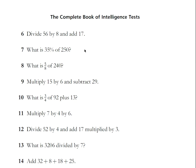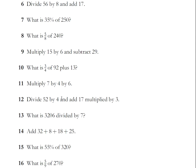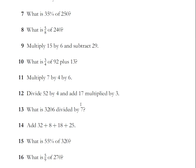5/8 of 240 - divide 240 by 8 gives you 30 times 5, 150. Multiply 15 by 6, 90, subtract 29, 61. Most of these answers I don't even really need to think about them. The one where there was a decimal, a half involved, I did have to think about it a little bit. 3/4 of 92, divide 92 by 4 so you're halving it twice, 46, 23 times 3, 69, plus 13, 82.